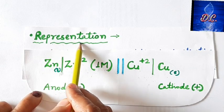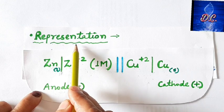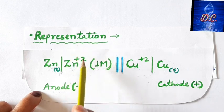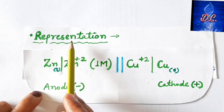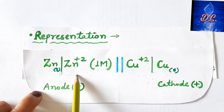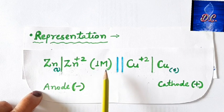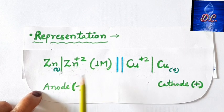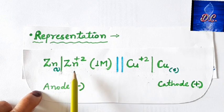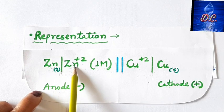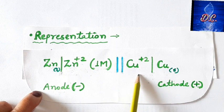Now let's see the representation of the cell — how you represent a galvanic cell. The rule is: first write the half cell in which oxidation is occurring (the anode), and then write the half cell in which reduction is occurring (the cathode). In our galvanic cell, the zinc and ZnSO₄ half cell has oxidation, so it is written first, followed by the copper half cell where reduction occurs.